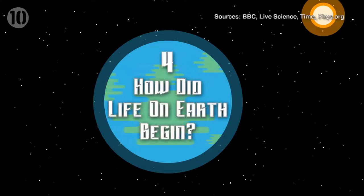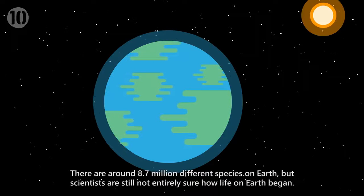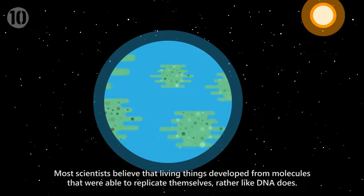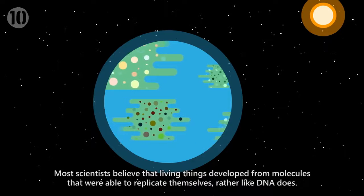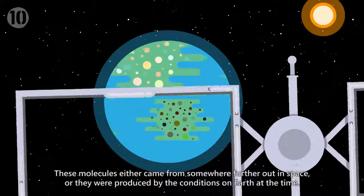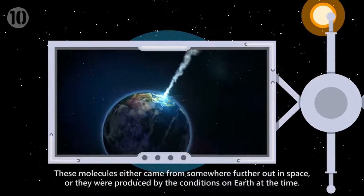Number 4: How Did Life on Earth Begin? There are around 8.7 million different species on Earth, but scientists are still not entirely sure how life on Earth began. Most scientists believe that living things developed from molecules that were able to replicate themselves, rather like DNA does. These molecules either came from somewhere further out in space, or they were produced by the conditions on Earth at the time.